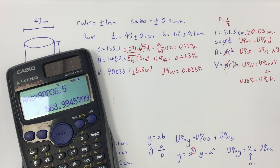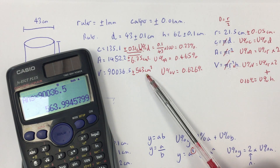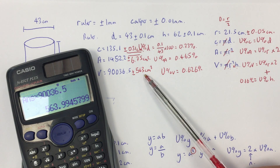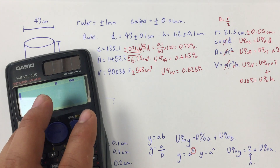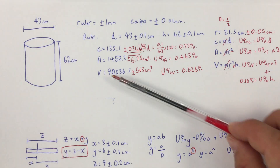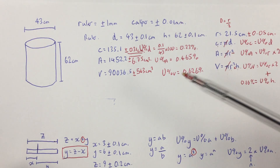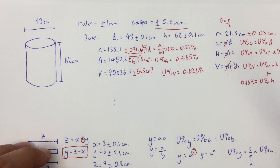Even though the percentage uncertainty is quite small, it's a quite large number of centimetres cubed when scaled up — that's quite significant. Now, the final part is how this is different if we use the caliper, which has a better resolution and smaller absolute uncertainty.